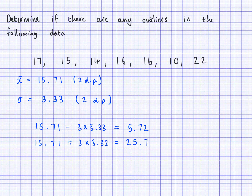These are the important values. 5.72 is much less than my lowest value of 10, so 10 is not an outlier. And 25.7 is much more than 22, which is my highest value, so 22 is also not an outlier. Everything in between cannot be an outlier. Using this calculation, we find there are no outliers — but using the interquartile range, we found that there is. These are the two ways to determine whether or not there are outliers in a set of data.